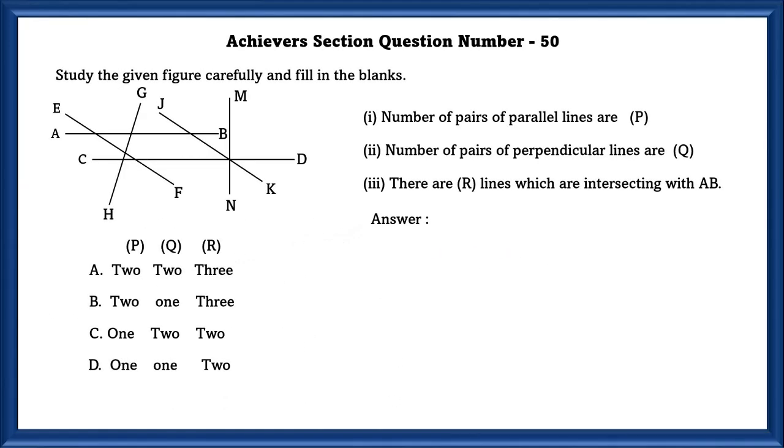Achievers section question number 50. Study the given figure carefully and fill in the blanks. Number of pairs of parallel lines in the given figure is P. AB is parallel to CD and EF is parallel to JK. So there are two pairs of parallel lines.